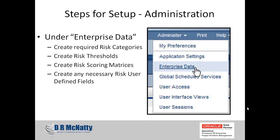In order to get started, we're going to talk about some of the administration. For those of you who are administrators of the system and want to utilize some of this functionality, there are a few settings that need to be addressed first. To access the settings to administer the risk, under the administration menu, select Enterprise Data. In this area is where we will create our risk categories, thresholds, identify risk scoring matrices, and any user-defined fields we might want to associate with our risks.